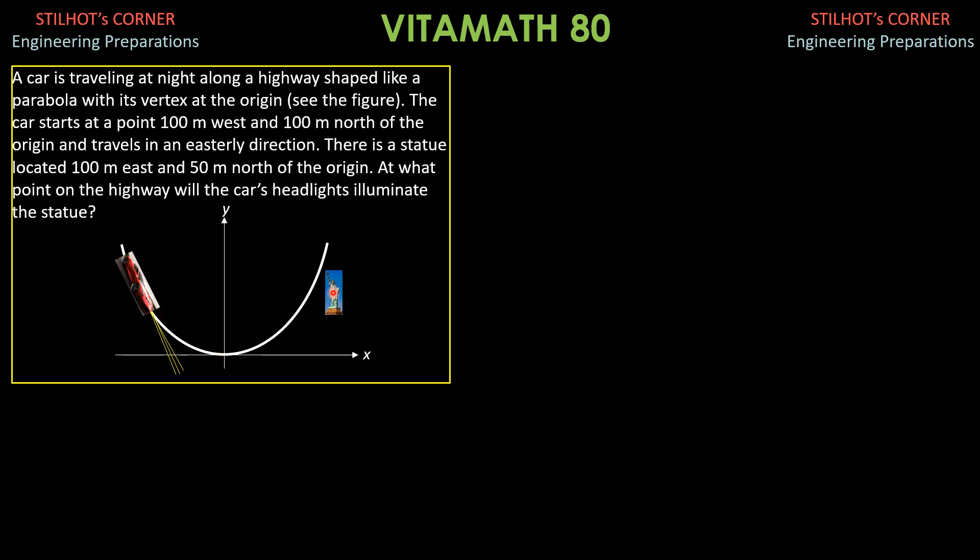And for this car, for its headlights to illuminate this statue here, the statue is located at, we call this point P, the position of the car so that it will illuminate the statue as x, y and this statue, the tangent to the highway should be directly hitting the statue so that it satisfies the condition that the headlights will illuminate the statue.